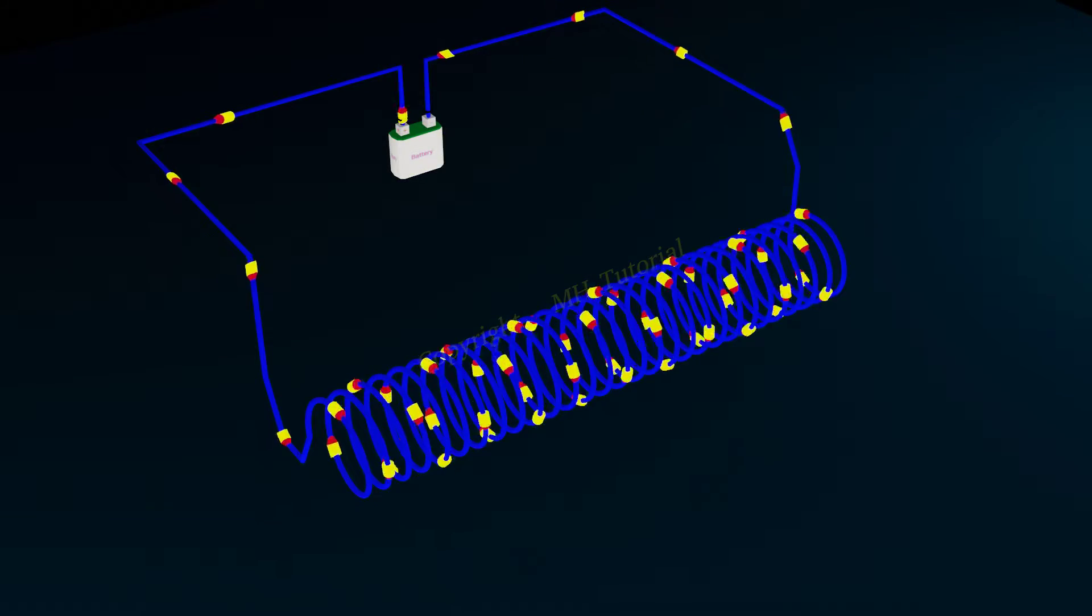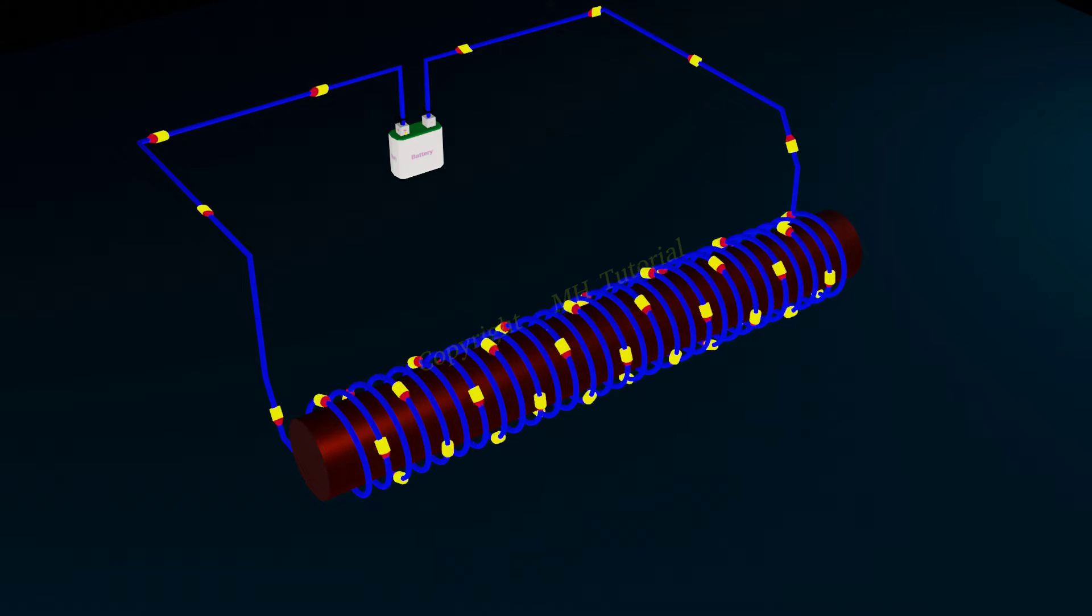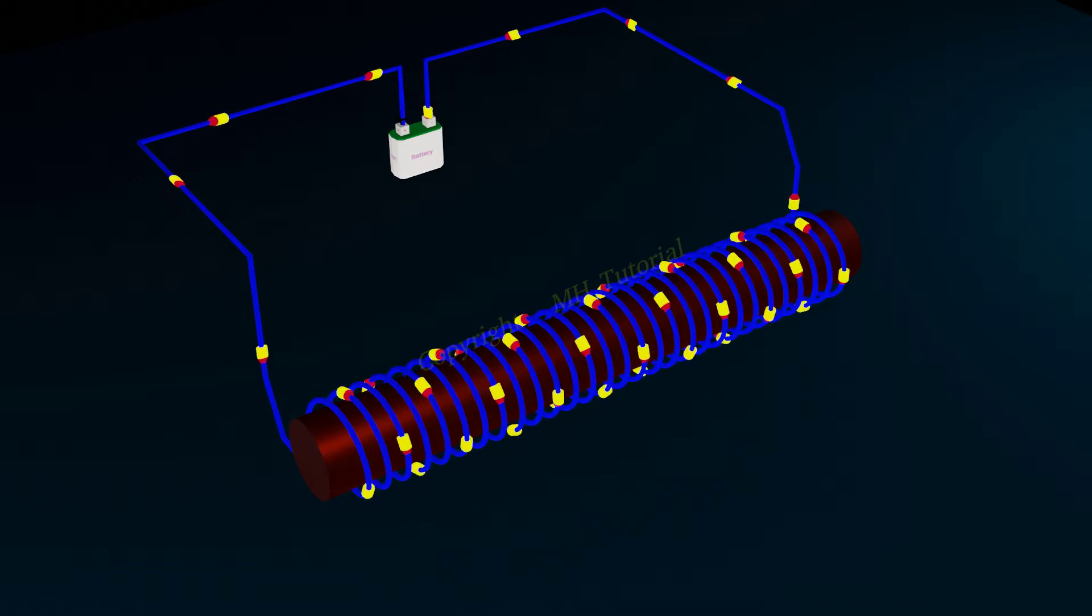If a ferromagnetic material, like iron, cobalt, etc., inserted through it as a core material, its magnetic field increases many times.